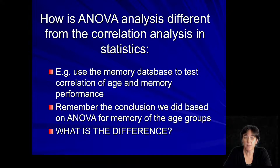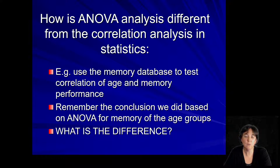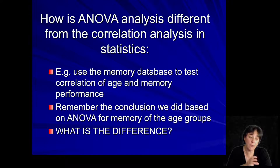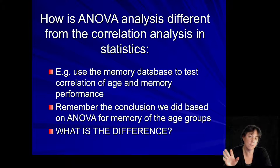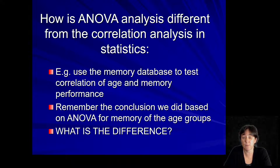How is ANOVA different from a correlation analysis in statistics? There's one major difference: with correlation, you can only conclude a relationship. You cannot say, for example, that age has an effect on memory because it doesn't — you would have to create groups, let's say young, middle-aged, and old people, and run an ANOVA in order to be able to say that age has an effect on memory. If you just use a correlation analysis, all you can conclude is a relationship. And of course with regression you can also predict.